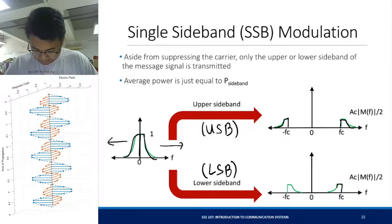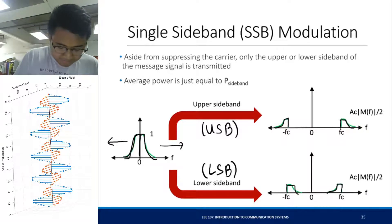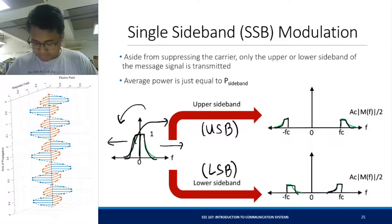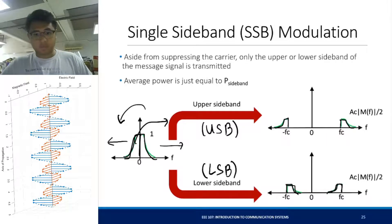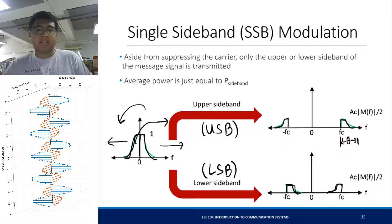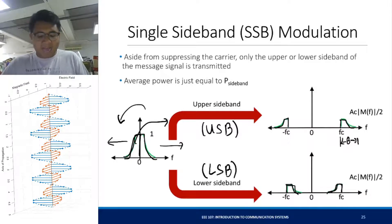The lower sideband will be translated and reflected on the other side. We have saved bandwidth — the bandwidth of the resulting signal is the same as the baseband bandwidth, and the power is halved compared to the double sideband.